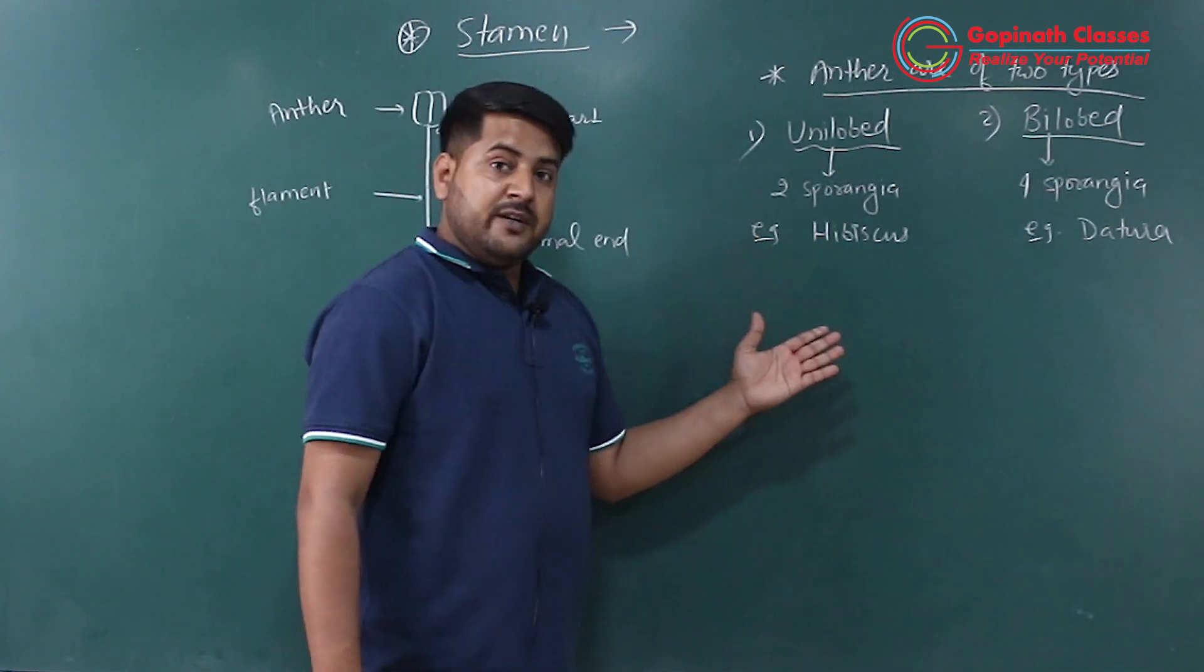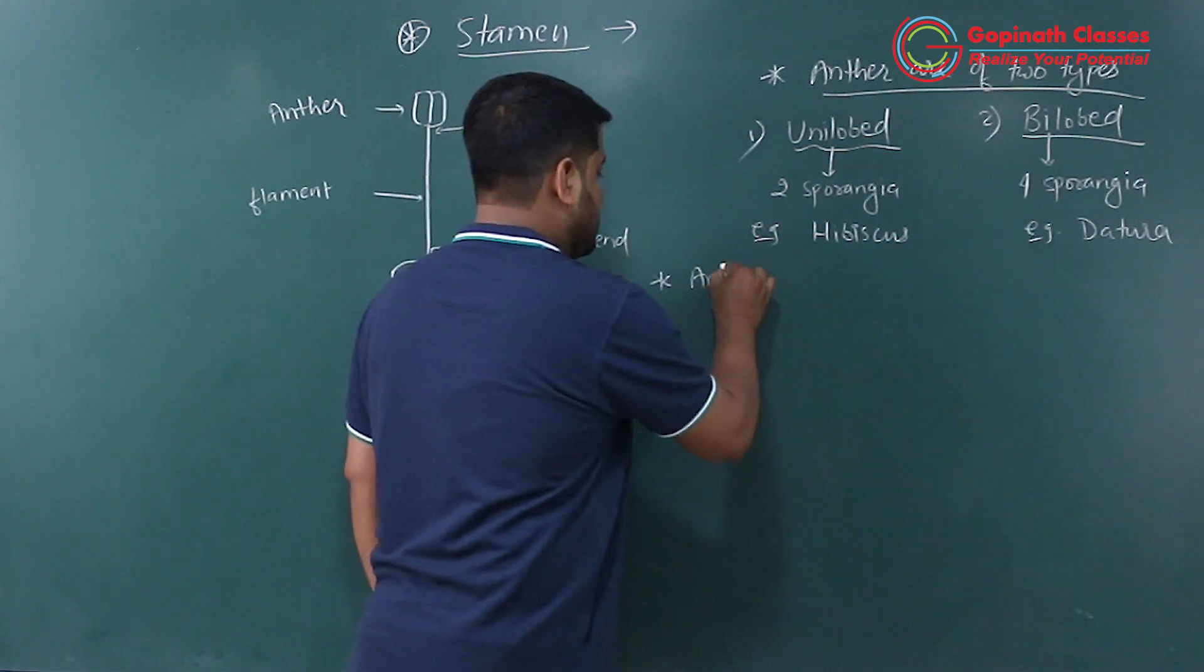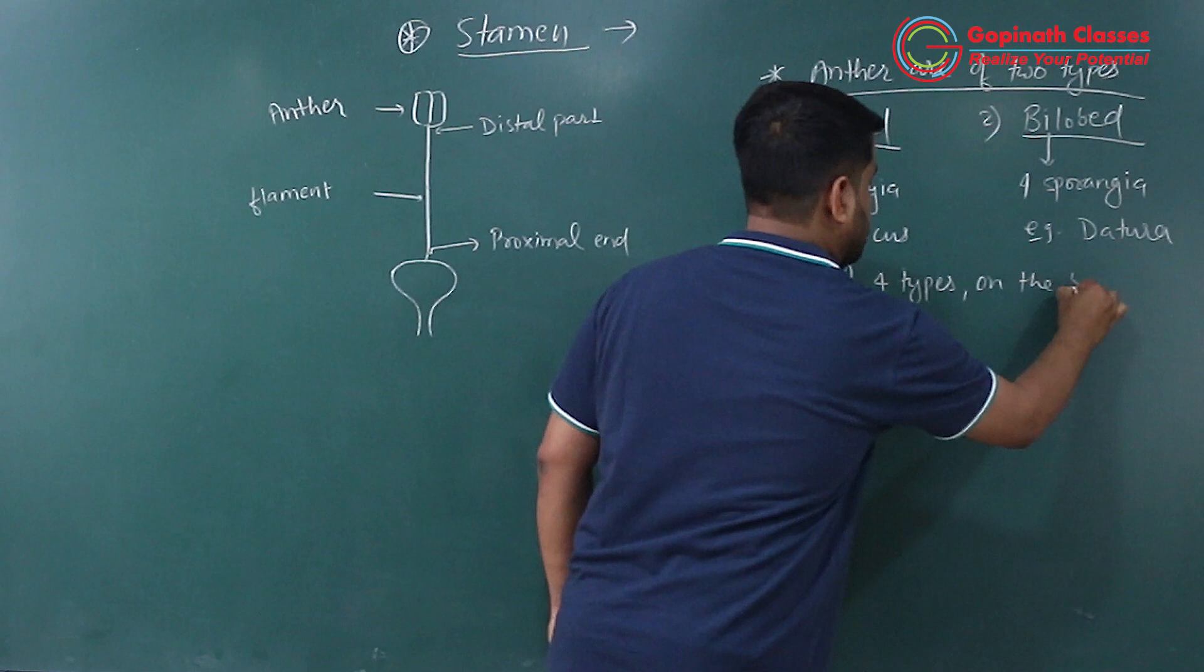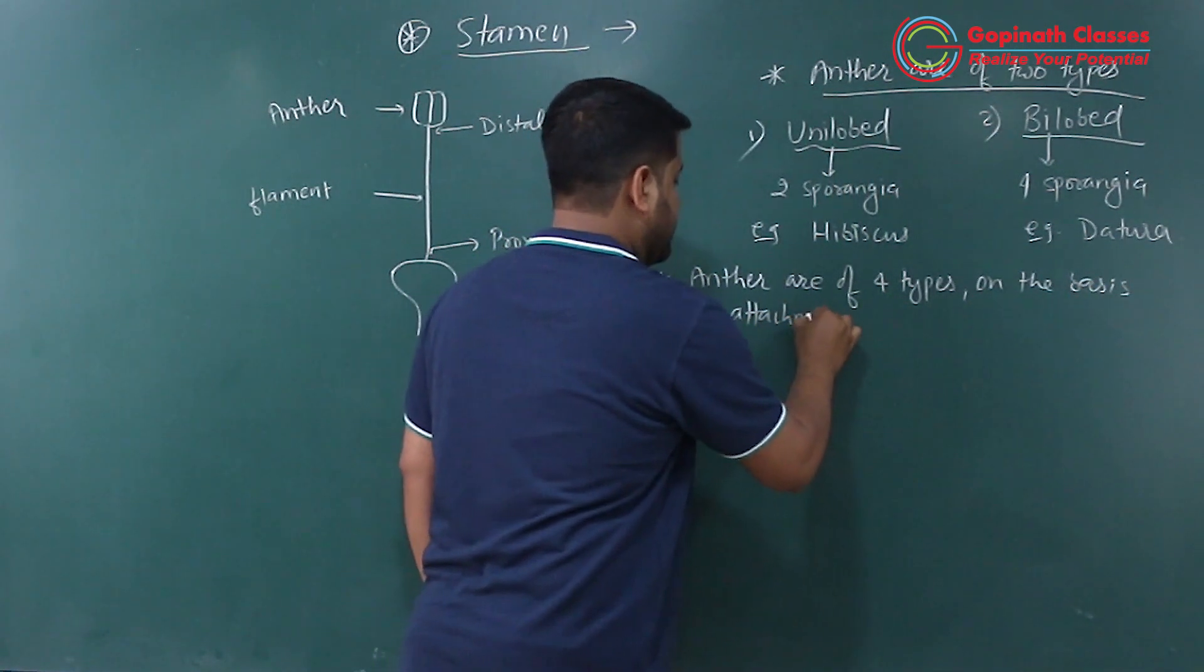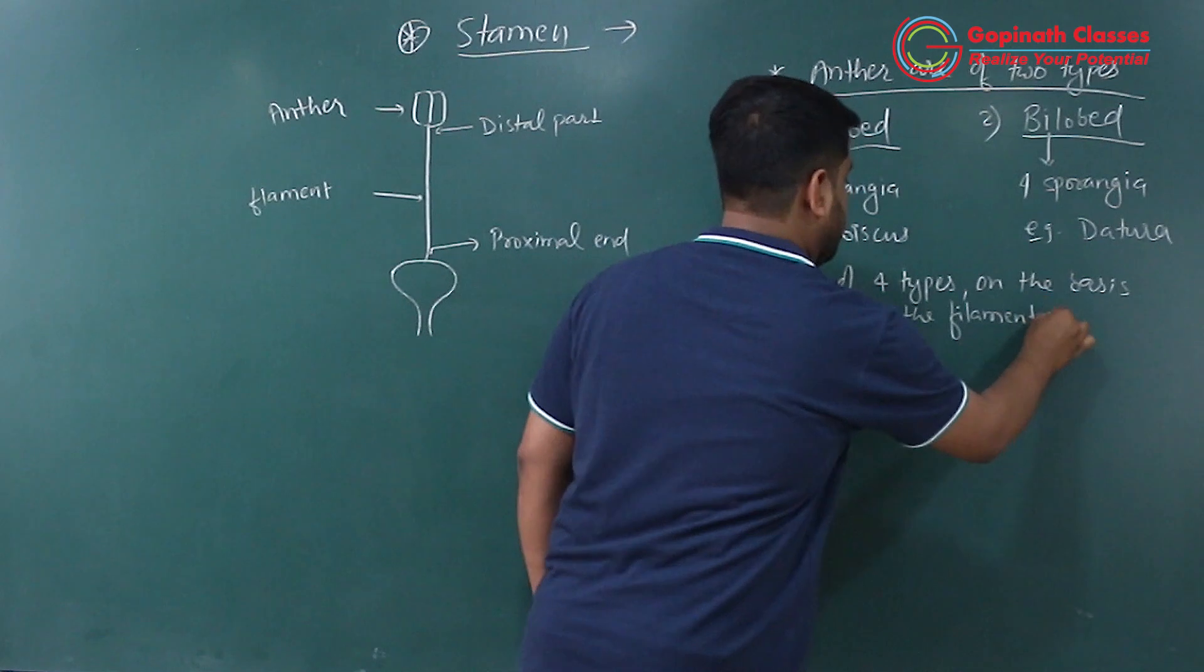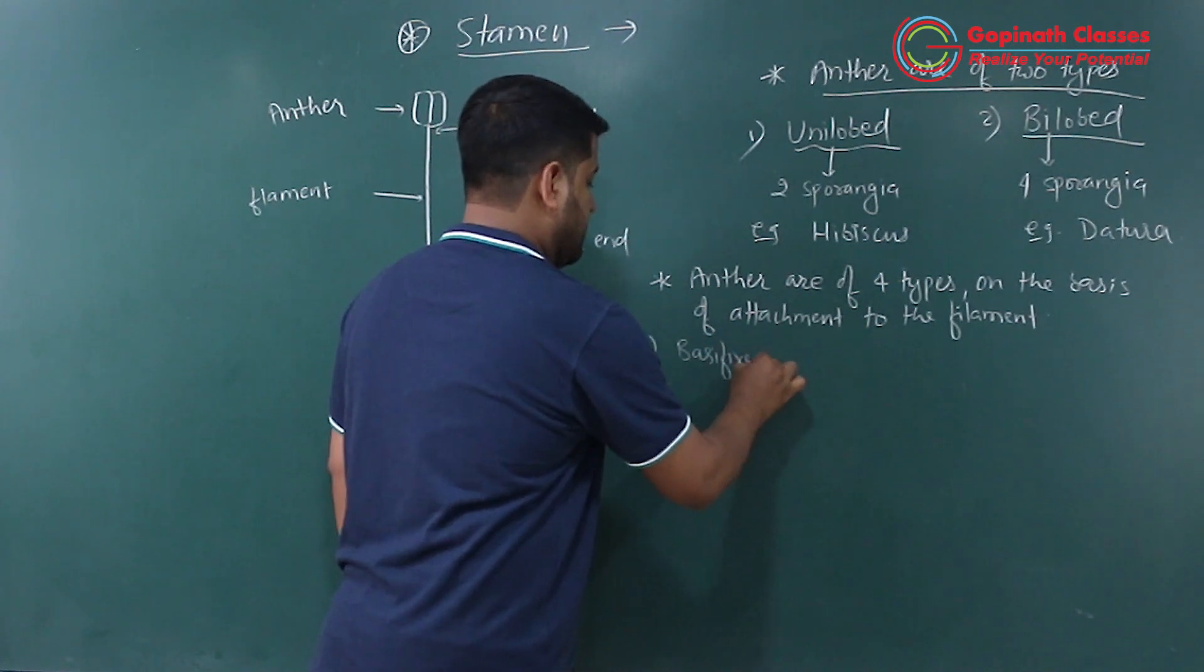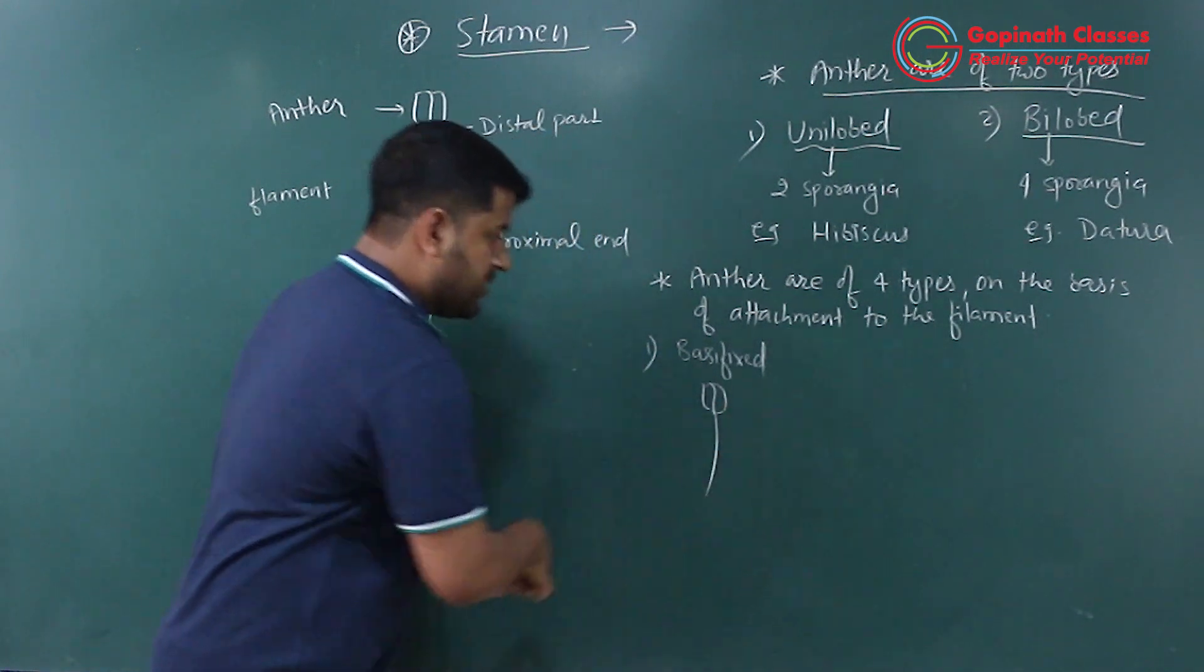Now on the basis of attachment of filament to the anther, anther has four types. First one is basifixed. Means if the filament emerges from the base of the anther, it's basifixed.